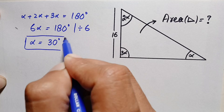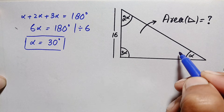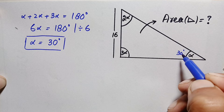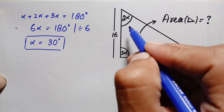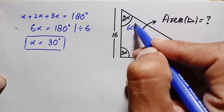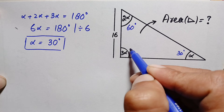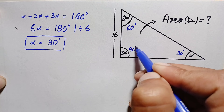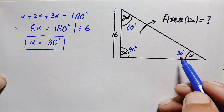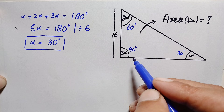So the angle alpha is 30 degrees. This means the second angle is 2 × 30 = 60 degrees, and the third angle is 3 × 30 = 90 degrees. This is a special 30-60-90 triangle.